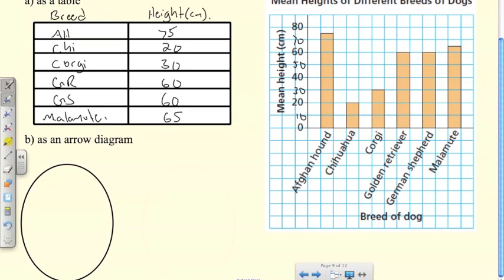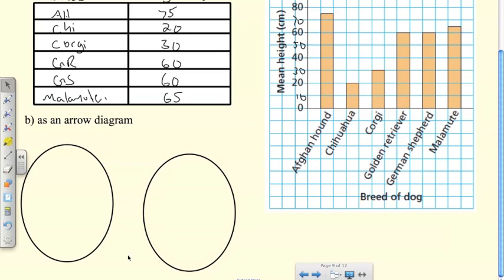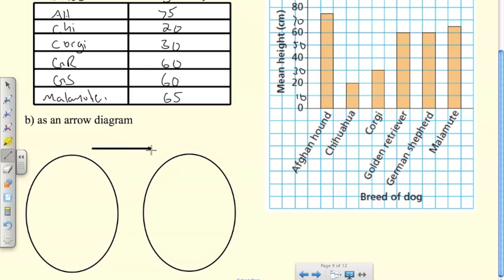Now as an arrow diagram. When drawing our diagrams we're always using ovals. The association here is an Afghan hound has a mean height, so we're going to say it has a mean height in centimeters. On the left I'm going to have the breeds, on the right the heights. I'm going to write the breeds in alphabetical order: Afghan hound, Chihuahua, Corgi, Golden Retriever, German Shepherd, and Malamute.